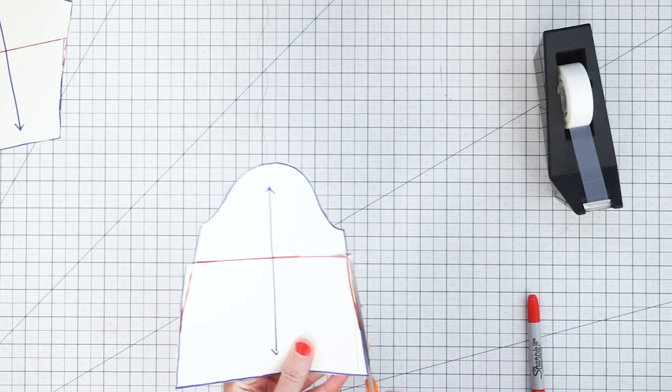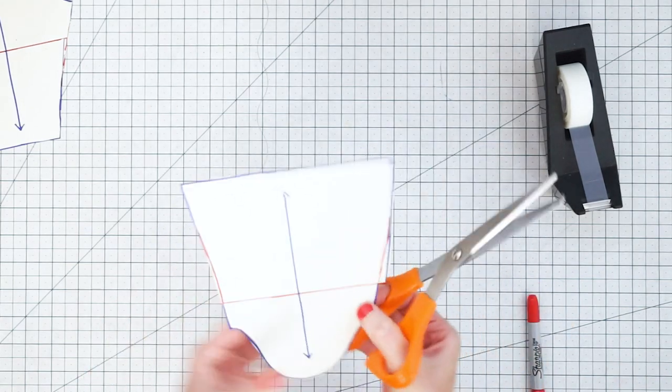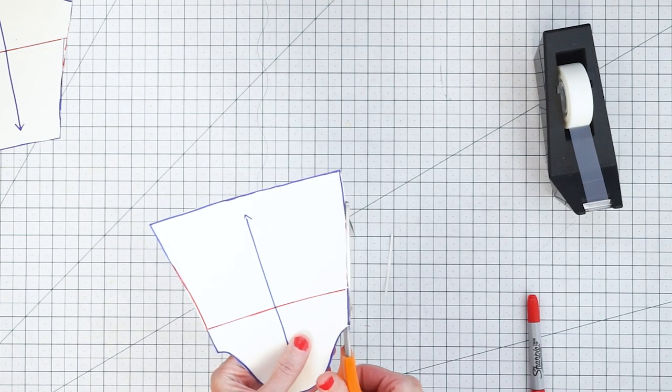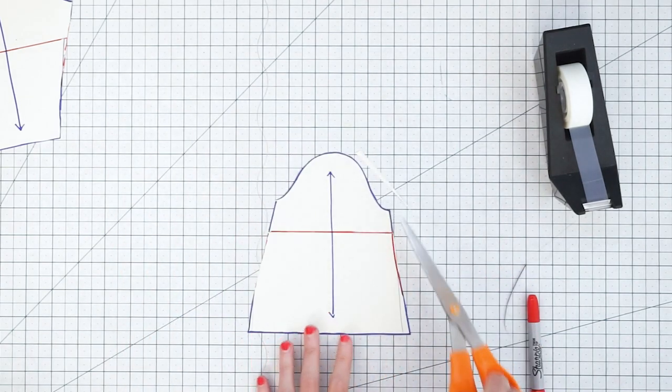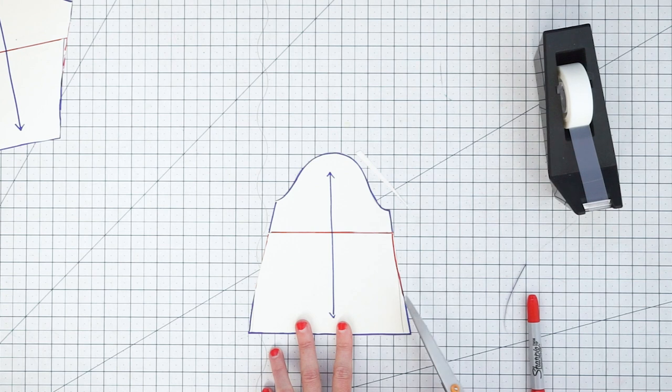So again being careful not to change anything at the top or the bottom of the sleeve because we might need to put these edges into another pattern piece and we don't want to have to alter that pattern piece. So we're just altering it right in the middle.